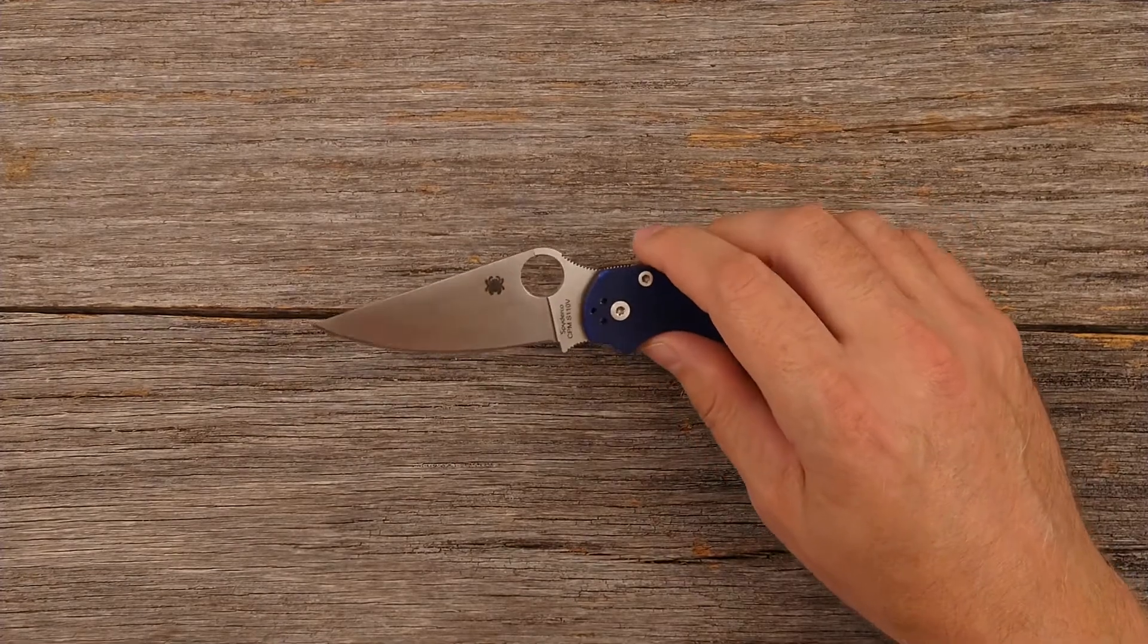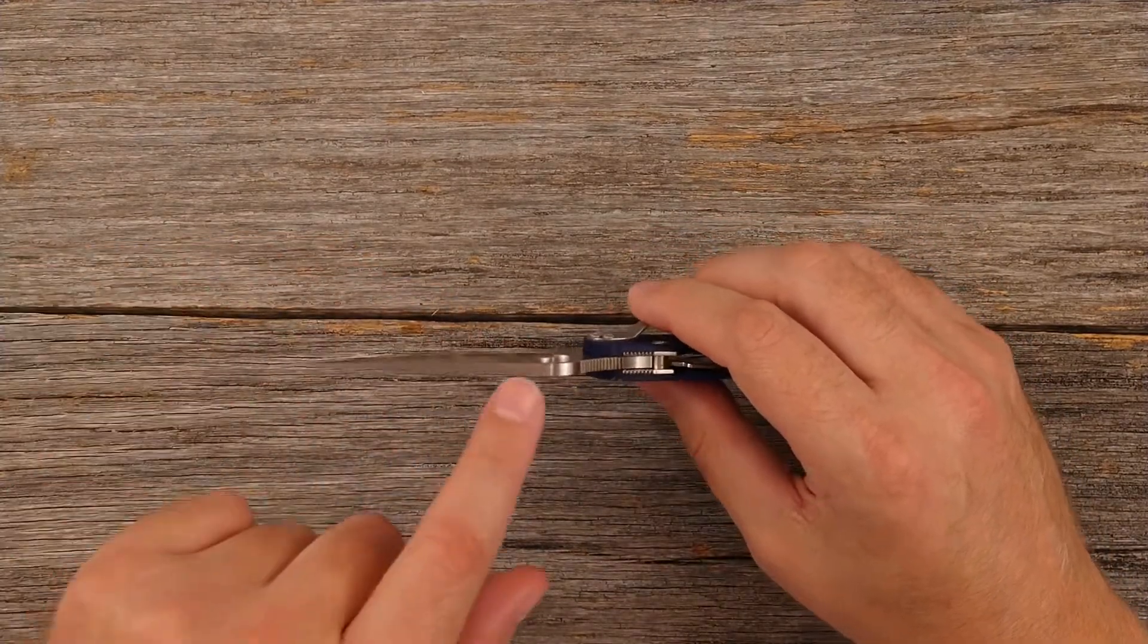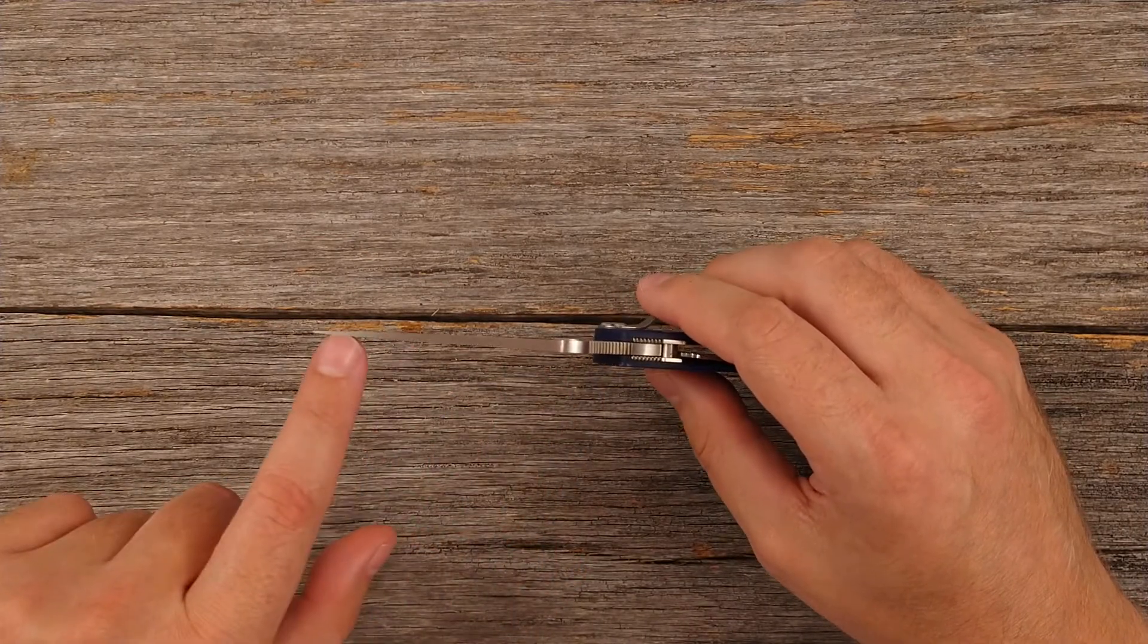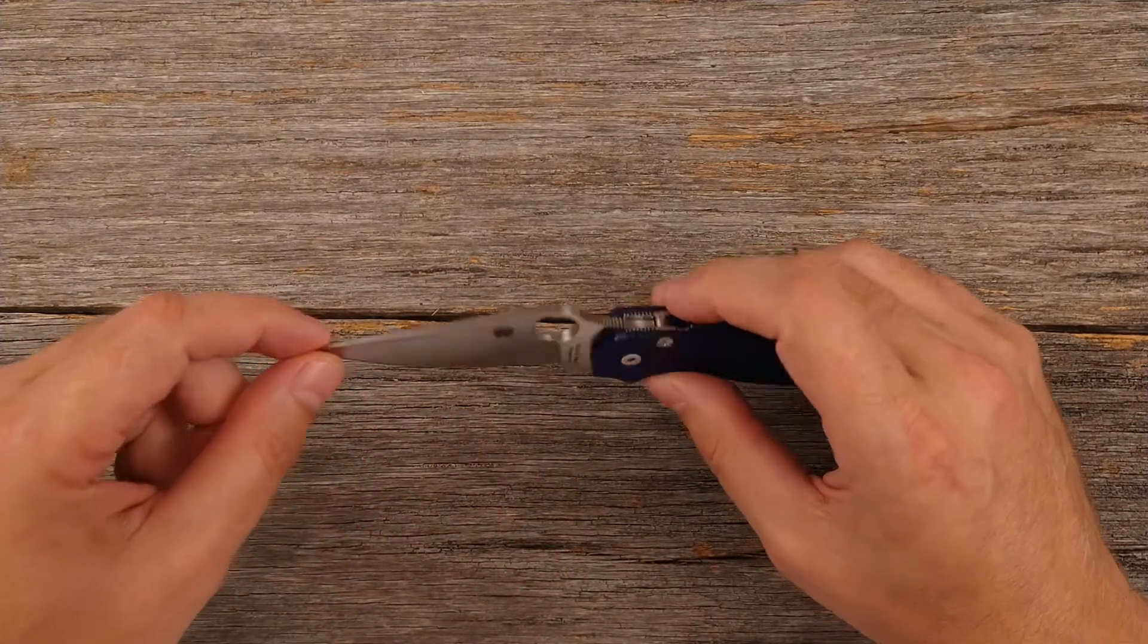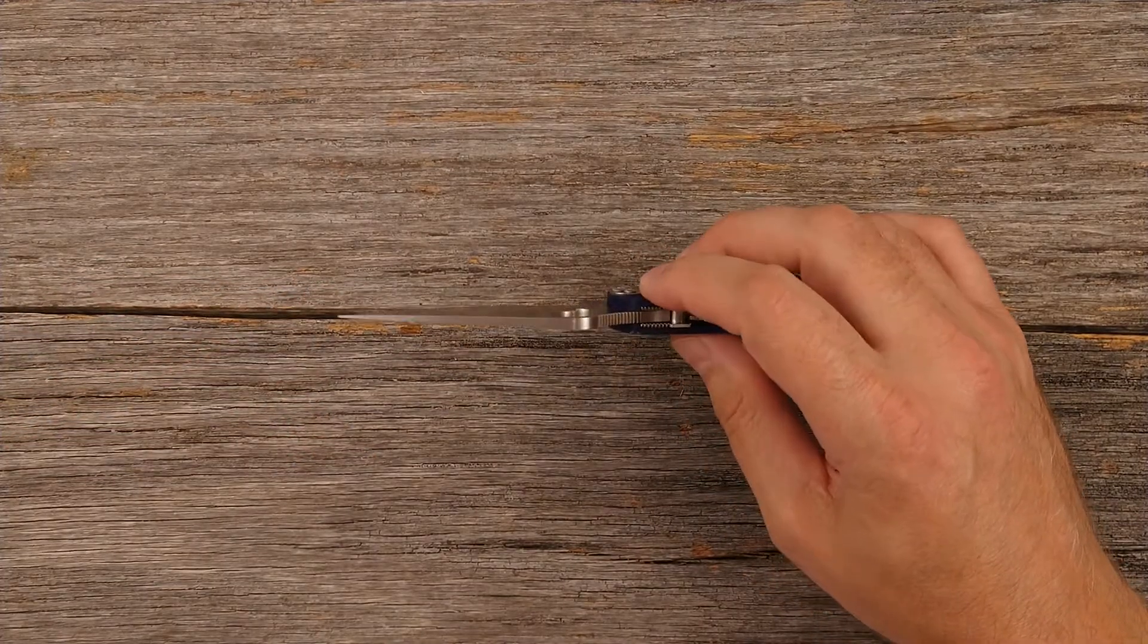Now, the reason I don't use this as a heavy work knife is because the blade type itself, the shape, you can see how narrow this thing gets toward the point. Very thin at the point in both directions. It's a very fine point. It's kind of needle like, if you will.